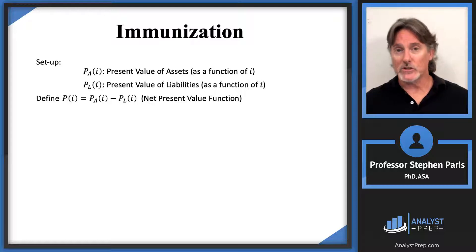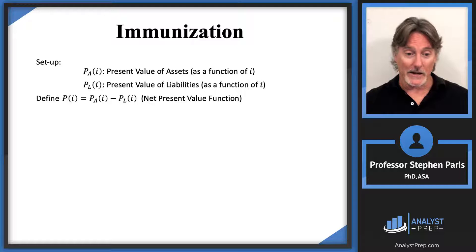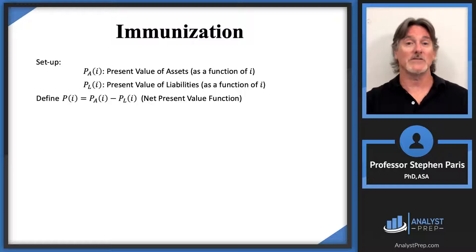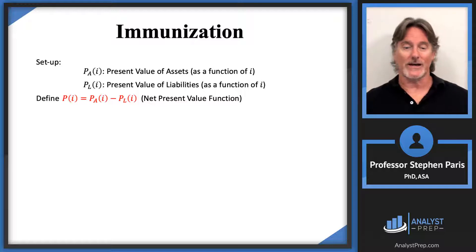You want that net present value to be positive — if it's positive, you say that you're in the black, meaning you have more assets than liabilities, which is a good thing. On the opposite end, if the present value of the assets is less than the present value of the liabilities, you have a negative net present value and you're in the red. You don't want to be in the red; you want to be in the black.